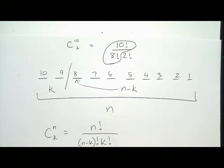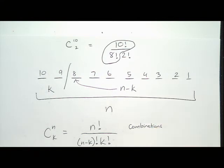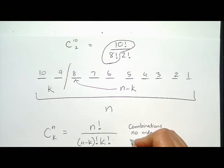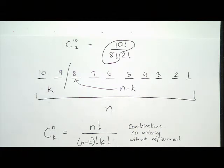If you have a fancy calculator, this is what the CNR button computes. I use k instead of r so that n's and r's don't look the same when writing fast on a test. k's and n's don't look similar, so that's why we use those letters.